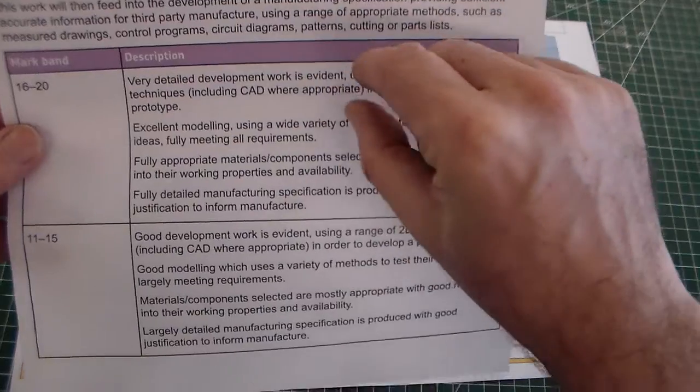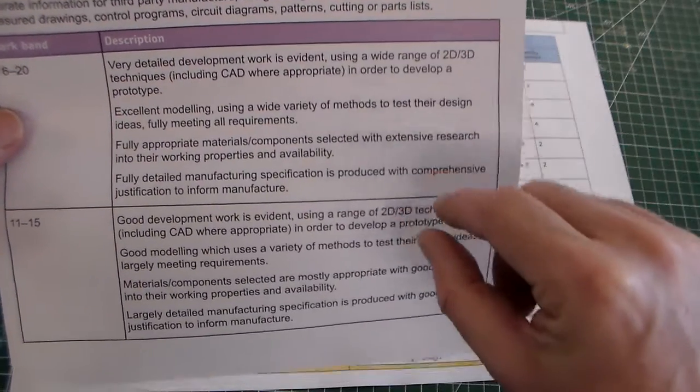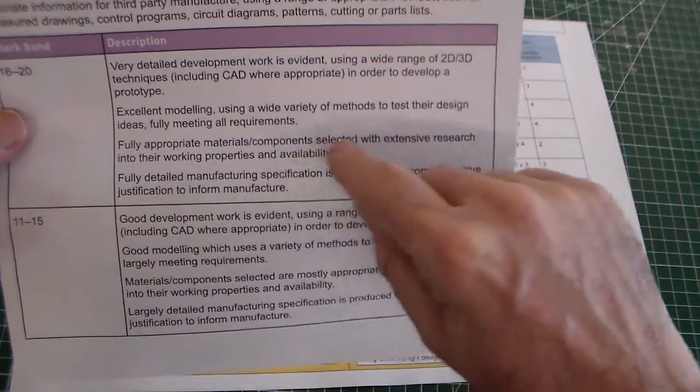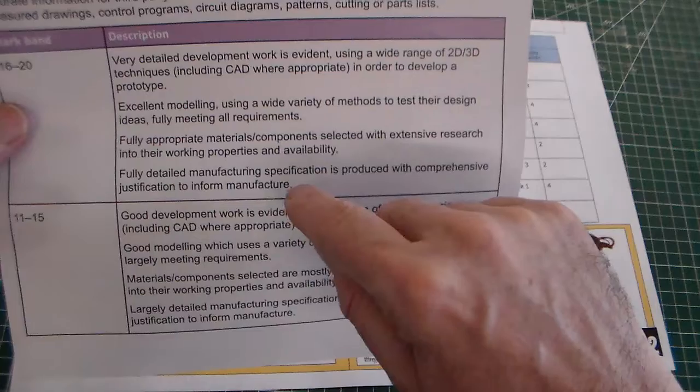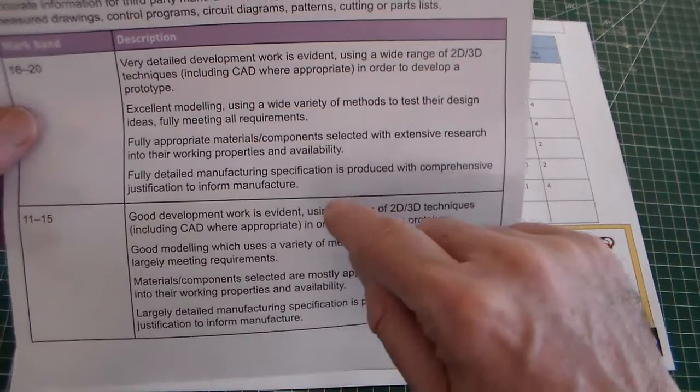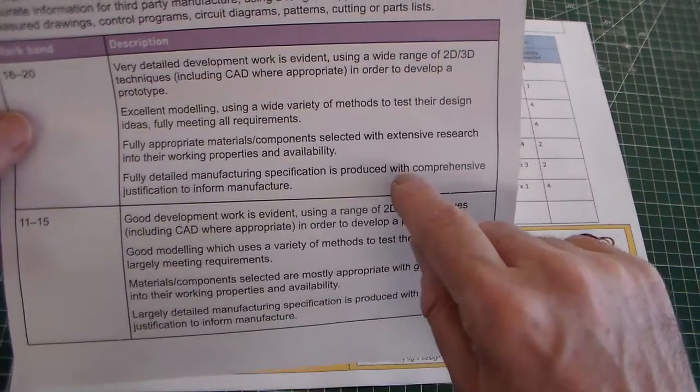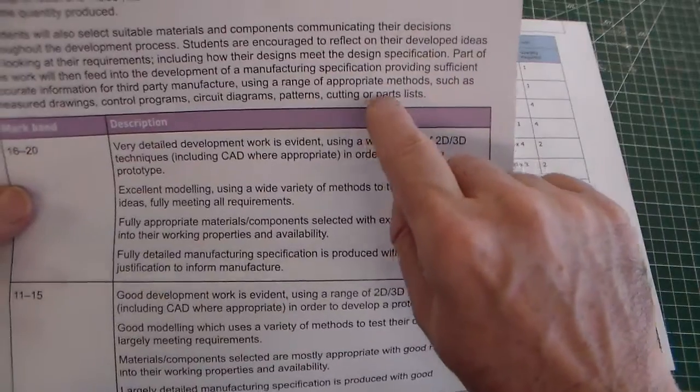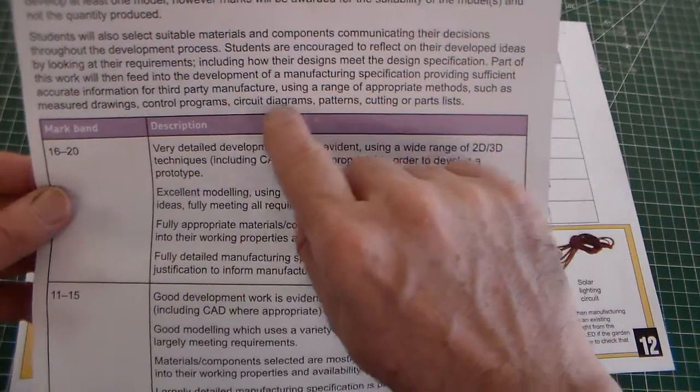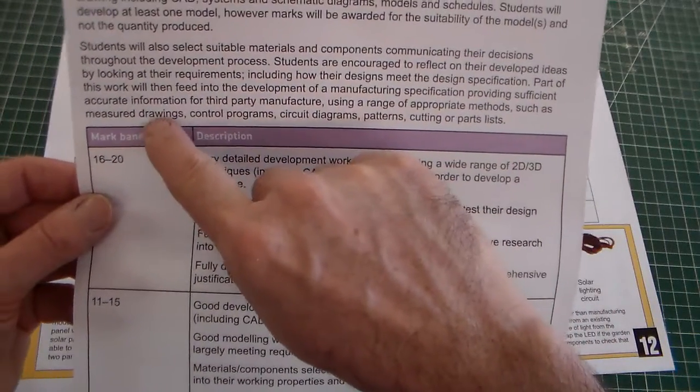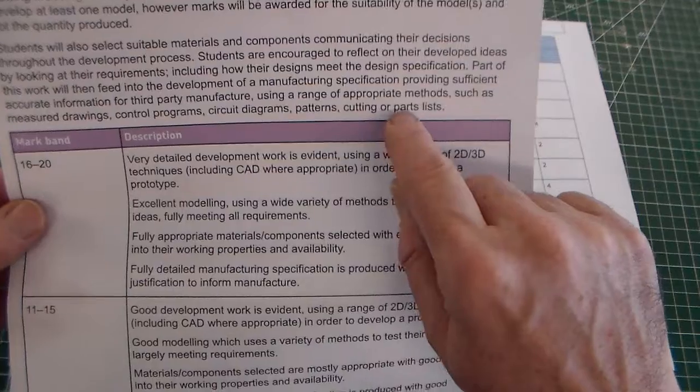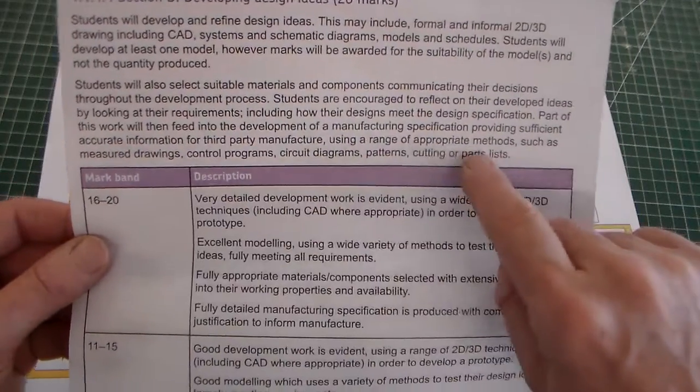The top band requires detailed development work, excellent modelling, fully appropriate materials and components selected based on their working properties, and a fully detailed manufacturing specification. This includes measured drawings, cutting lists, and parts lists, which are actually mentioned in the specification.